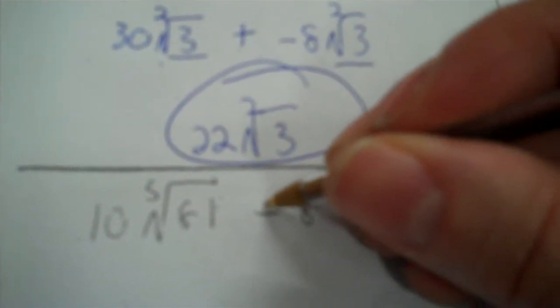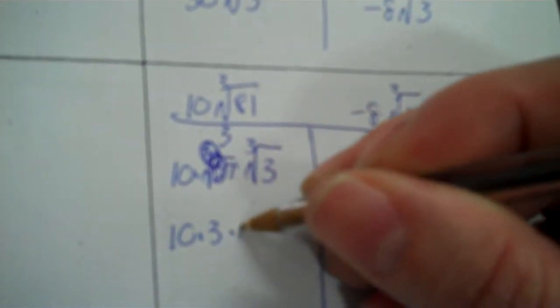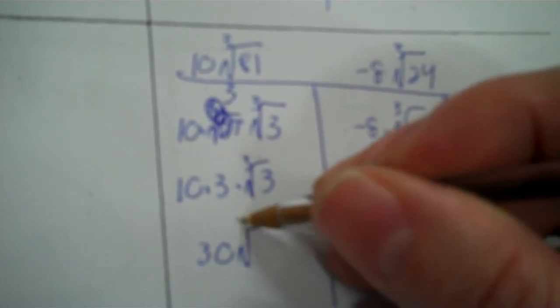Next one: 10 cubed root of 81, plus negative radical 3, plus negative 8 cubed root of 24. Check your cube roots and see if 81 and 24 are actually perfect cube roots. No, they're not, so you've got to break them up. Drop your integer factor — you're going to have another one that joins it. So 81: start at 64, decimal. 27 — bingo. So it's 27 and 3. That becomes 3. So we have 10 times 3 times the cube root of 3, which becomes 30 cubed root of 3.